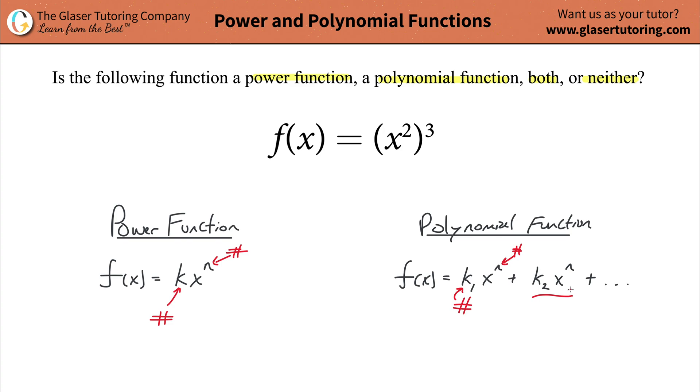It's then added to another term with an identical form. This is now another constant, this is a number, this will also represent a number, and that's a variable. This pattern will continue on however many terms you might have. A polynomial function can have one term, two terms, three terms, four, any number.